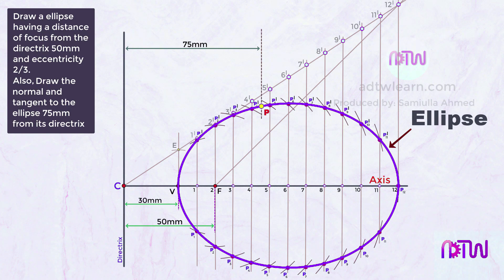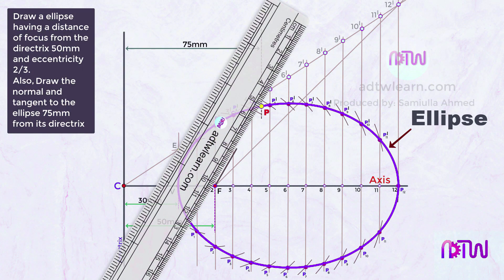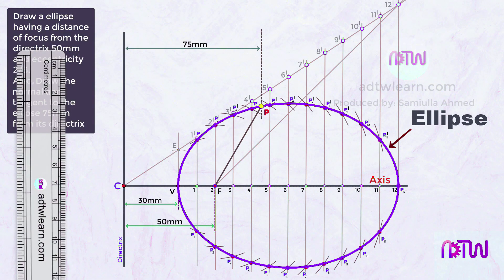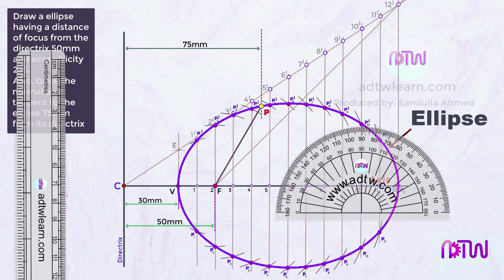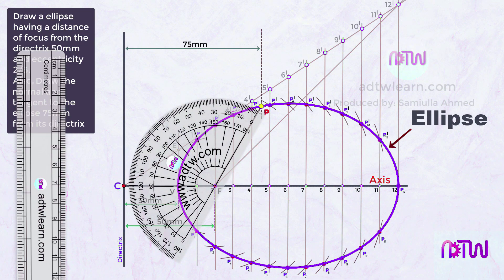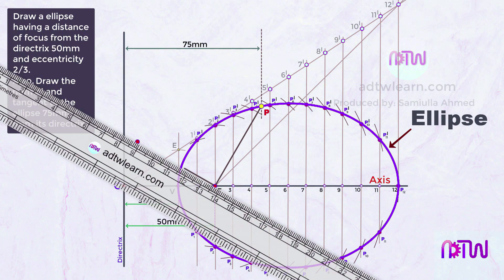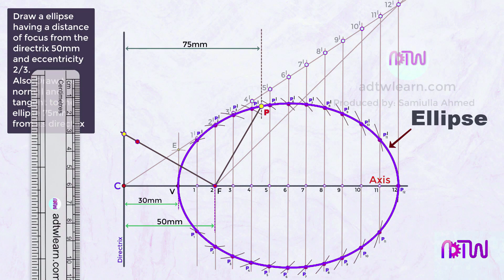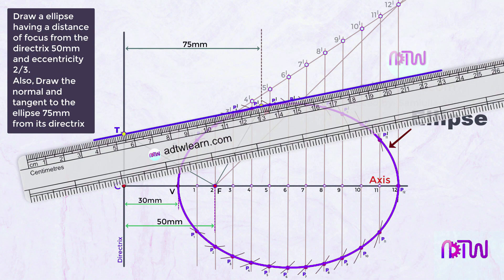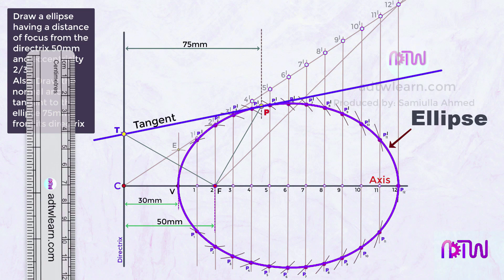To draw the tangent at point P, join P to the focus F with a line. Then draw a perpendicular to the line PF at point F using a protractor — mark 90 degrees at F and draw a line from F to the directrix. Mark this intersection as T. Draw a line through T and P; this line is the tangent to the ellipse. Then draw a perpendicular to the tangent through P, which gives the normal to the curve.